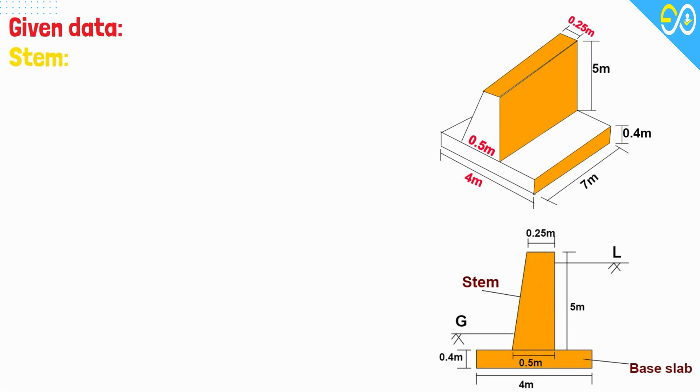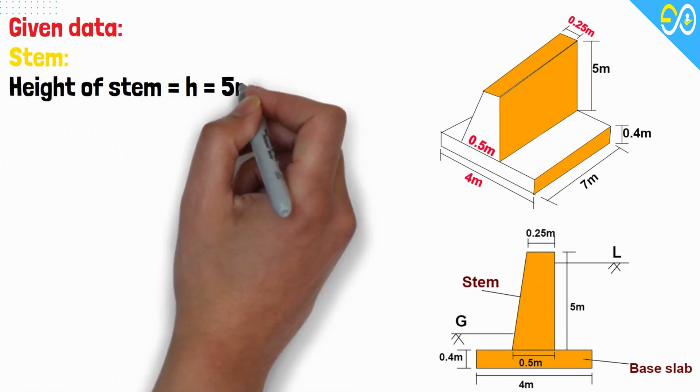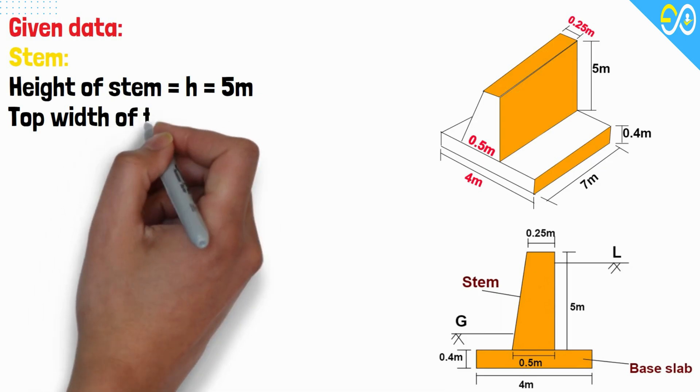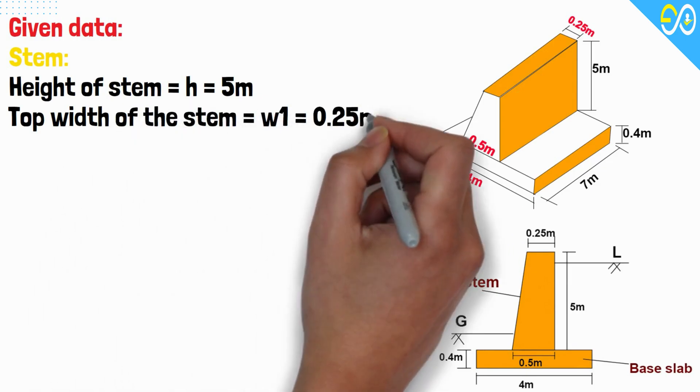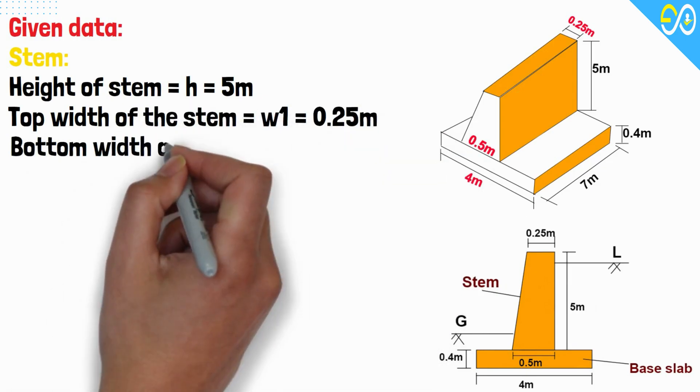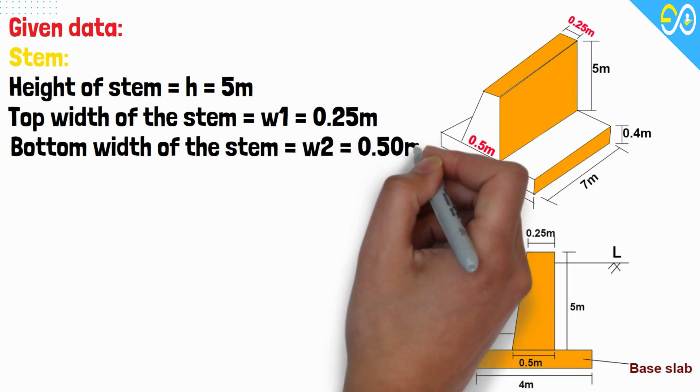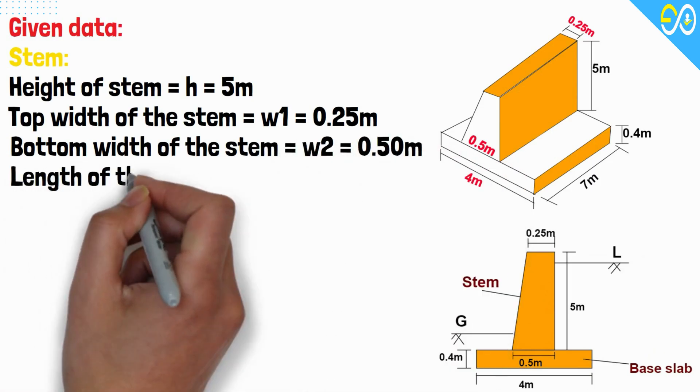Stem: Height of stem equals 5 meters. Top width of the stem equals 0.25 meters. Bottom width of the stem equals 0.50 meters. Length of the stem equals 7 meters.